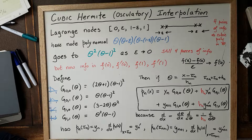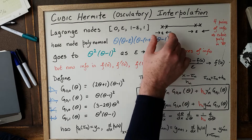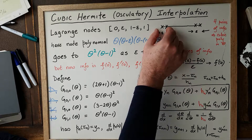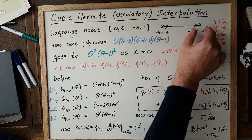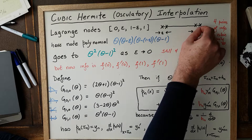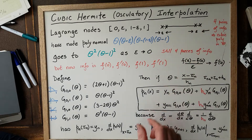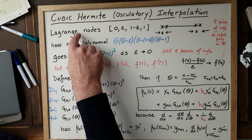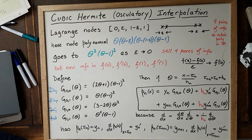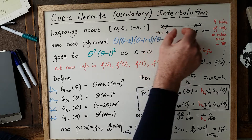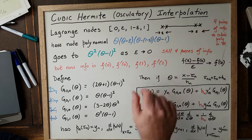That node polynomial is zero at each of the nodes. If we take the limit as epsilon goes to zero — if we allow these nodes to squish together — we violate the condition of Lagrange nodes, which have to be distinct.